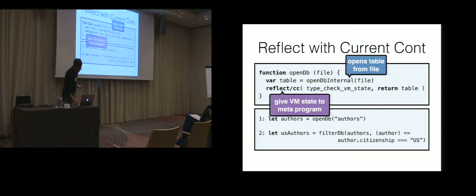After I've done all that real work, I'm going to do one extra step. I'm going to call, this is now a primitive of the virtual machine we're inside of, Reflect CC. It stands for Reflect the Current Continuation. So think about pausing the virtual machine, taking its state as a data structure, and giving that data structure to some function that the library author wrote called TypeCheckVMState.